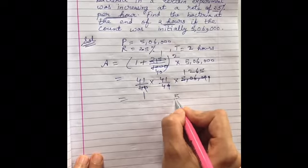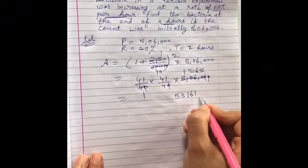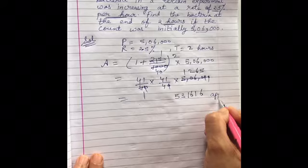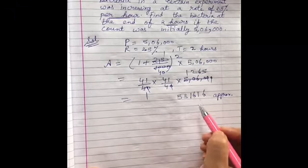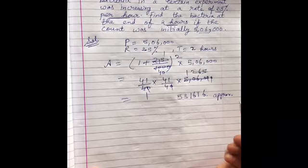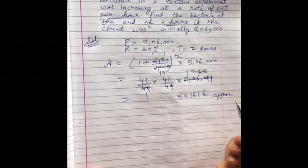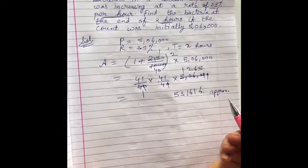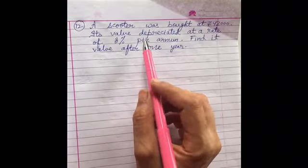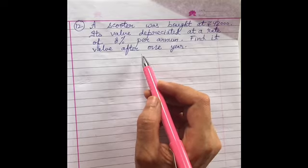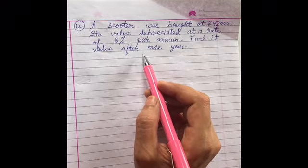So when you multiply them, you will solve it, you will get 531,616 approximately. Approximately because it will come in decimals. We cannot take the bacteria in decimals, so that is why we have taken the approximate value of the bacteria. So for population growth we use this formula, and for bacteria growth we also use this formula.